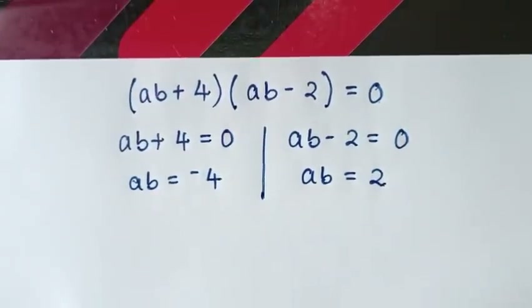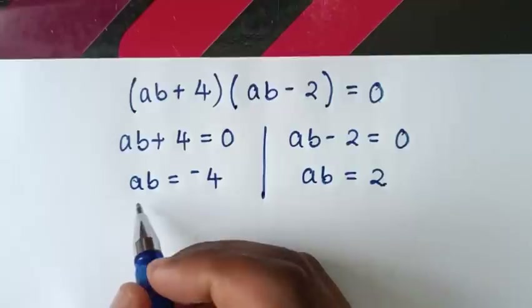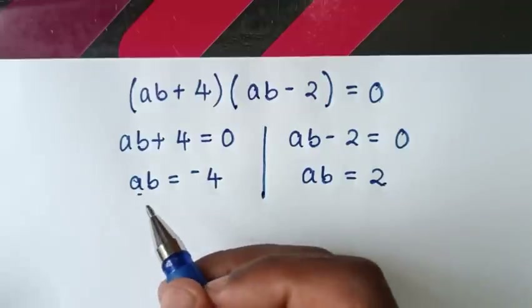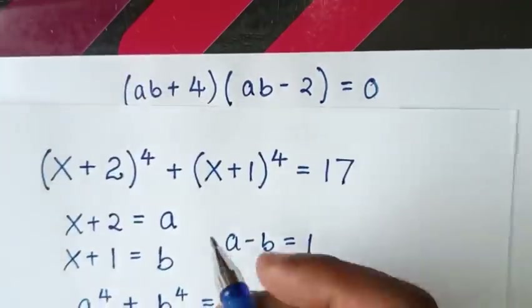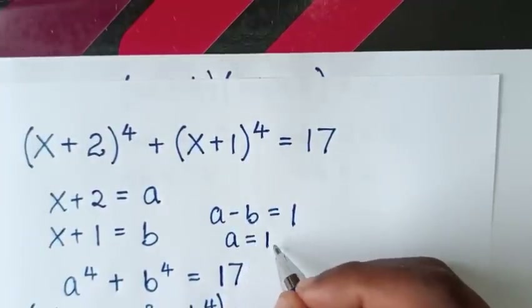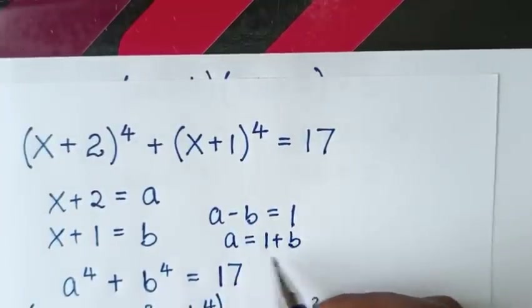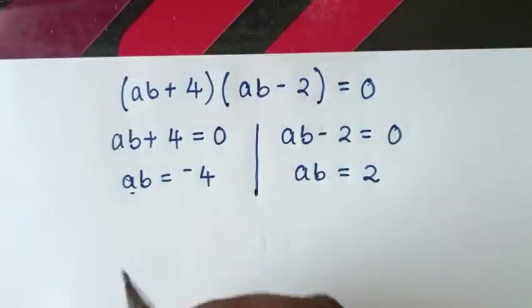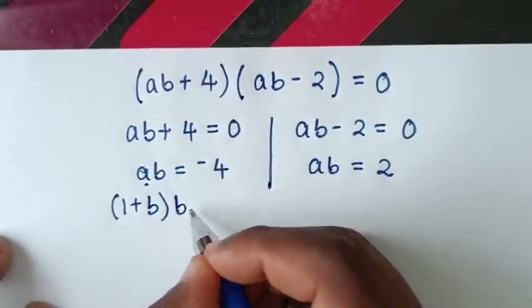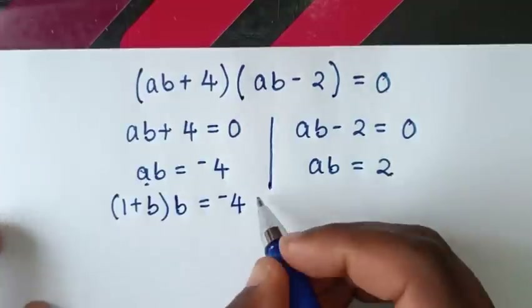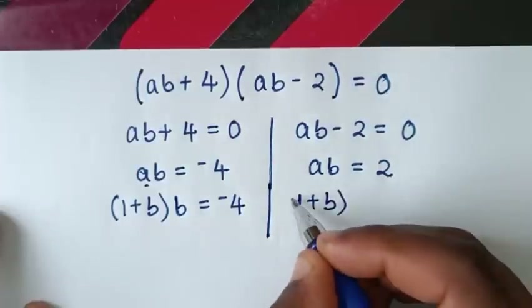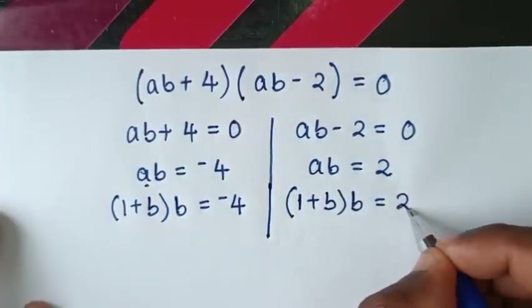Then in the next step, we substitute the value of a. From a-b = 1, taking -b to this side, a = 1+b. So substituting: (1+b)·b = -4, and also (1+b)·b = 2.